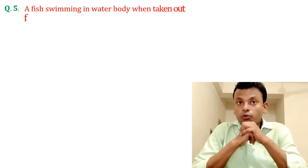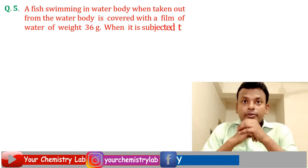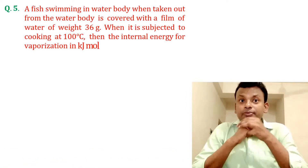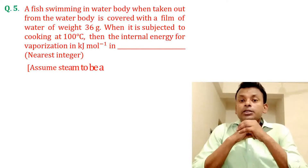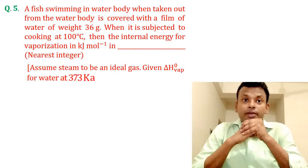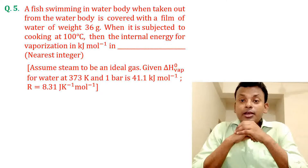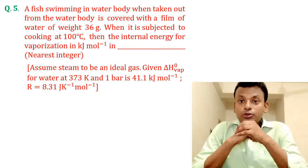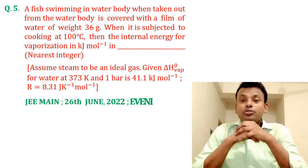Question 5. A fish swimming in a water body, when taken out, is covered with a film of water of weight 36 g. When subjected to cooking at 100°C, the internal energy for vaporization in kJ/mol is asked. Assume steam to be an ideal gas. Given ΔH_vap for water at 373 K and 1 bar is 41.1 kJ/mol, and R = 8.31 J/K·mol.